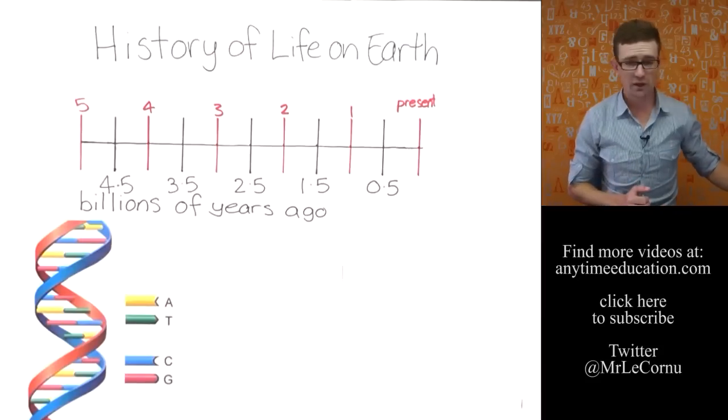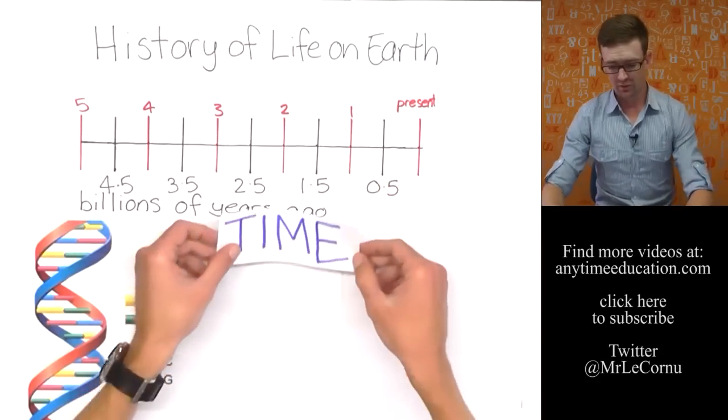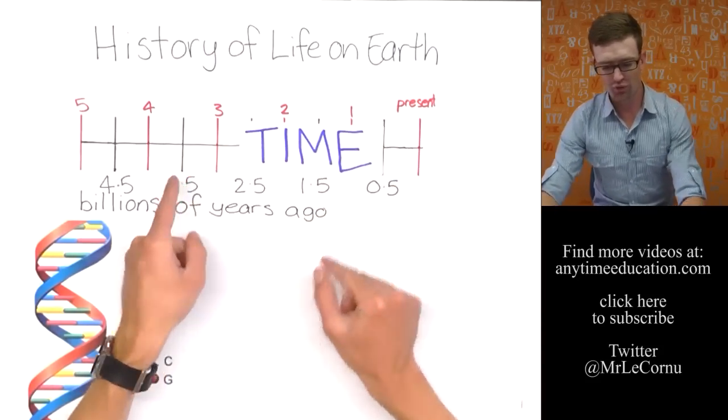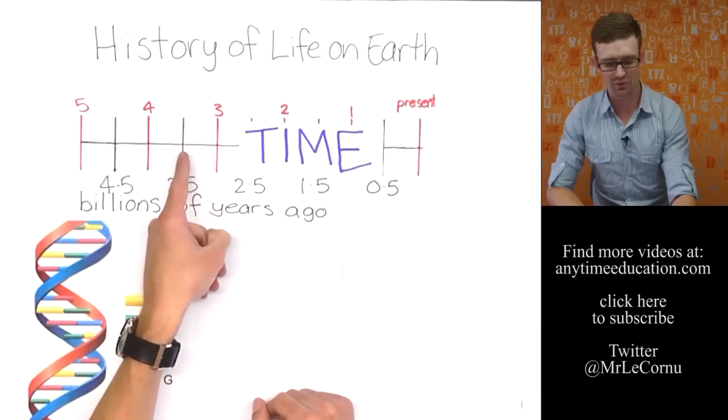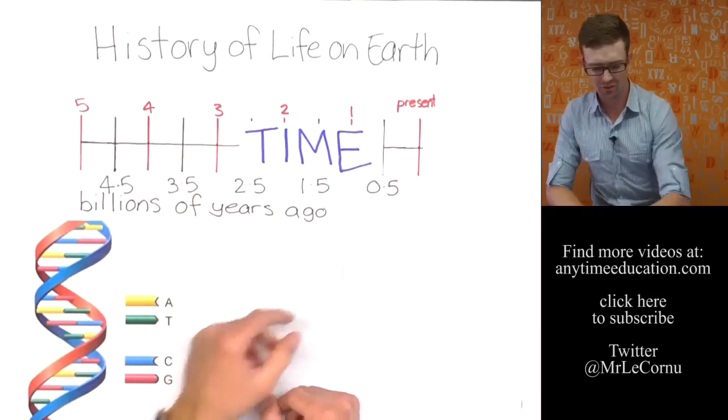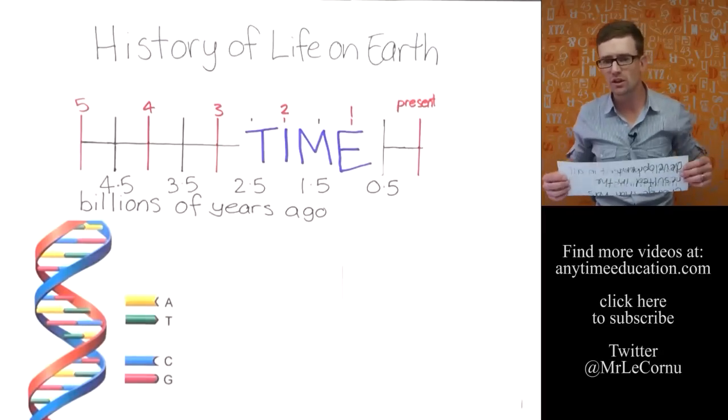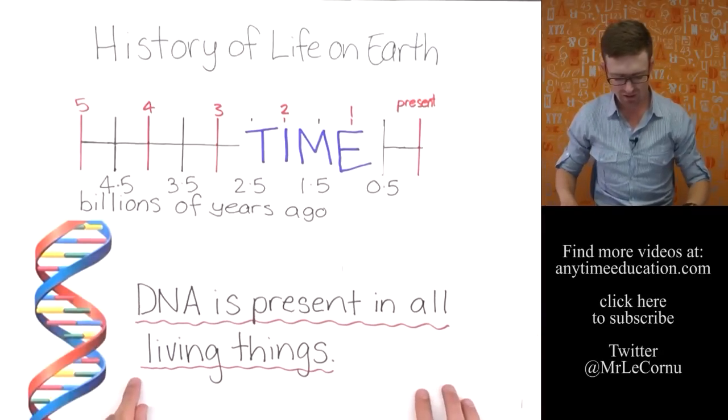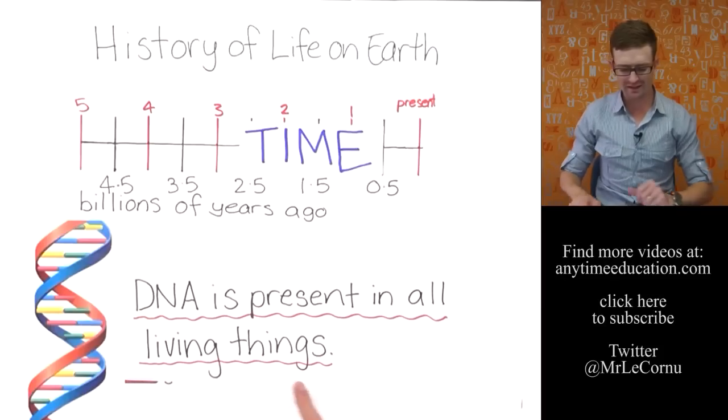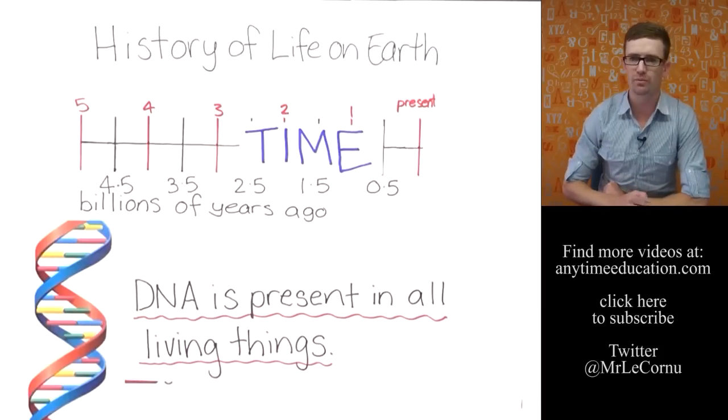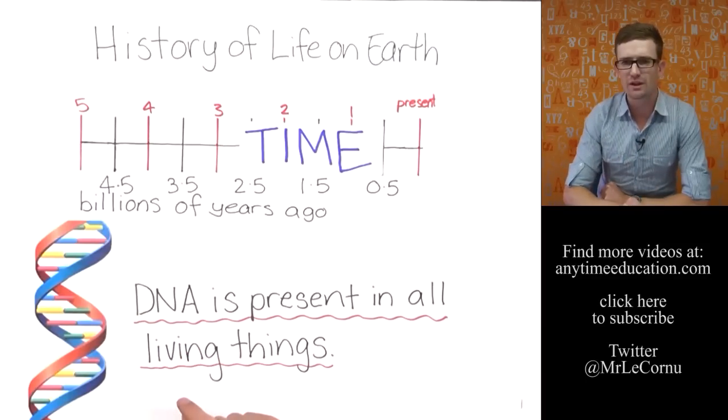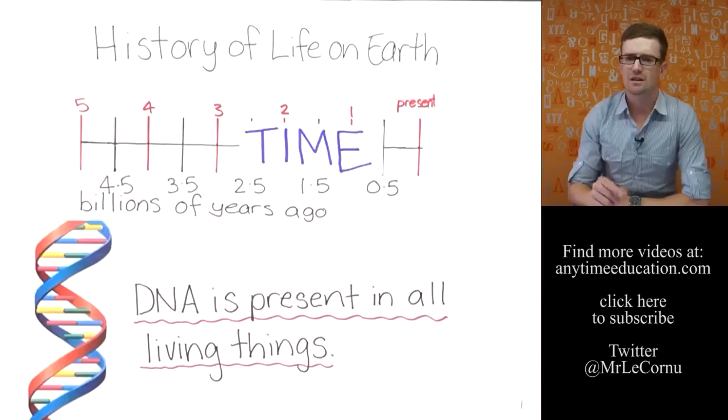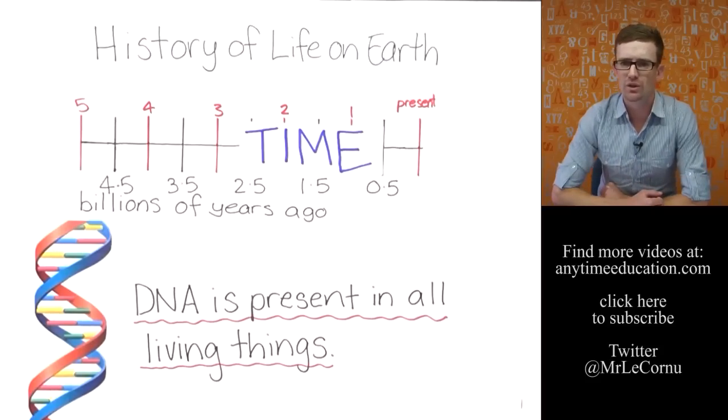And so now, if we fast forward to the present, which means we've gone through an awful lot of time from 3.5 billions of years ago where the first evidence of cells are until now, we find lots and lots of different types of living things and we also find that DNA is present in all of them and that is our key bit of evidence for evolution. The fact that DNA is present in all living things suggests that all living things came from one original source.